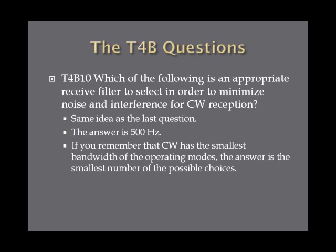Which of the following is an appropriate receive filter to select in order to minimize noise and interference for CW reception? It's the same idea as the last question. The answer is 500 Hz. If you can remember that CW has the smallest bandwidth of the operating modes, the answer is the smallest number of the possible choices. So just remember: 500 Hz for CW.